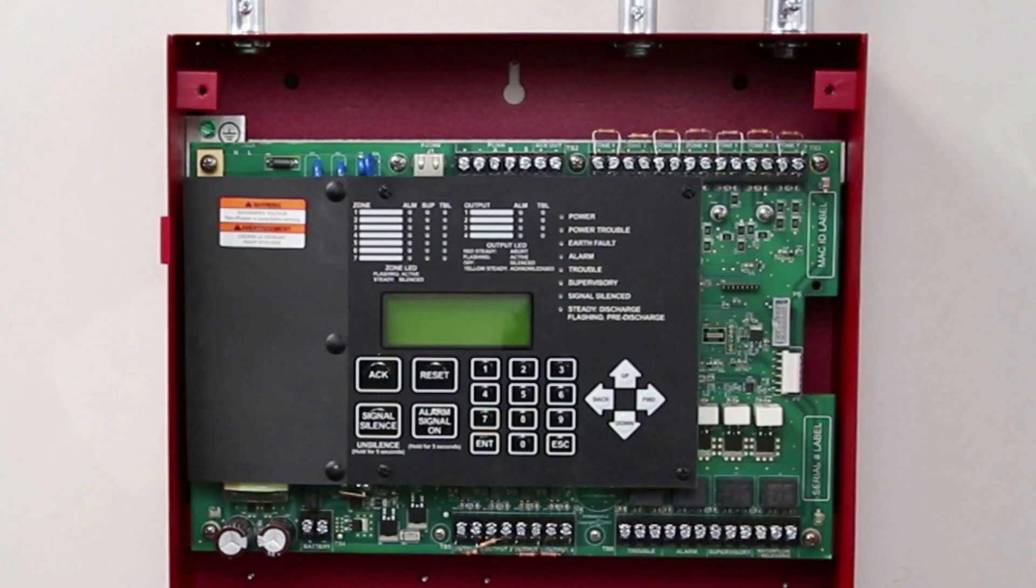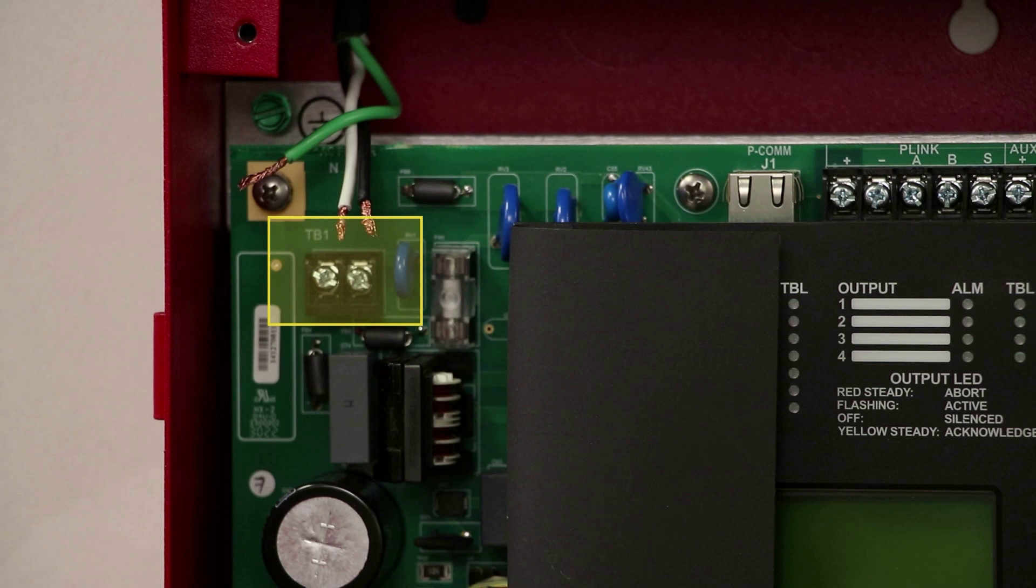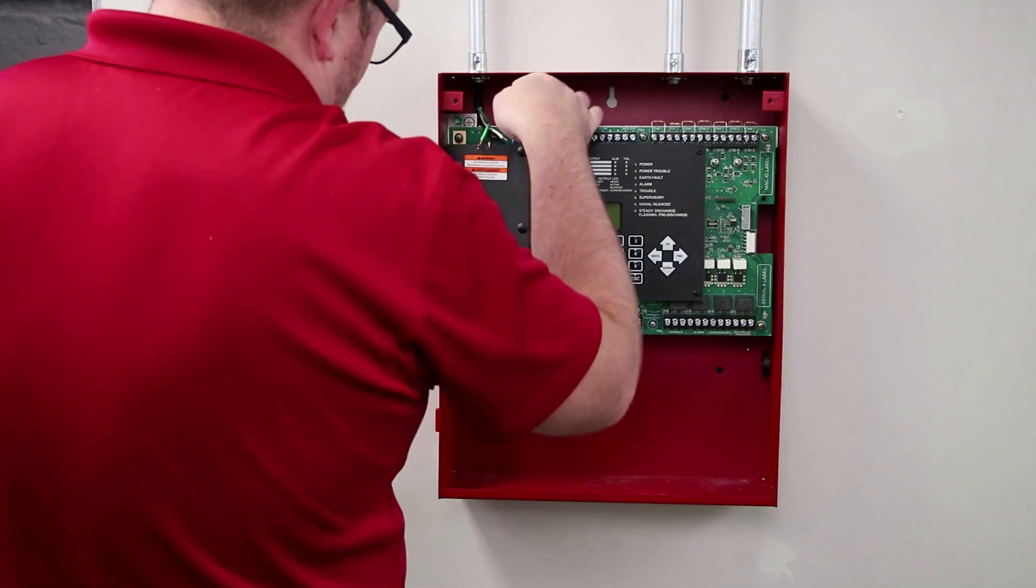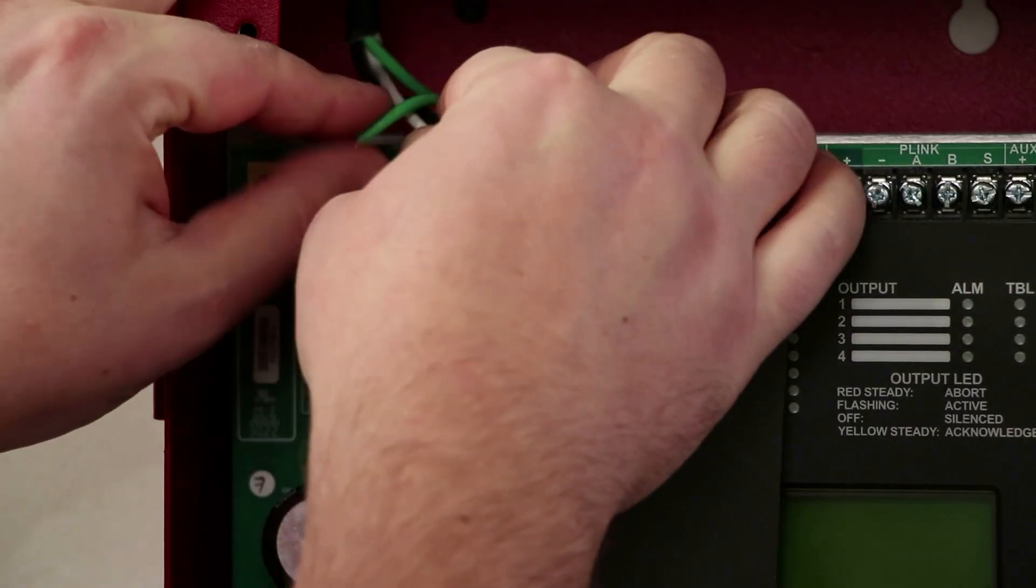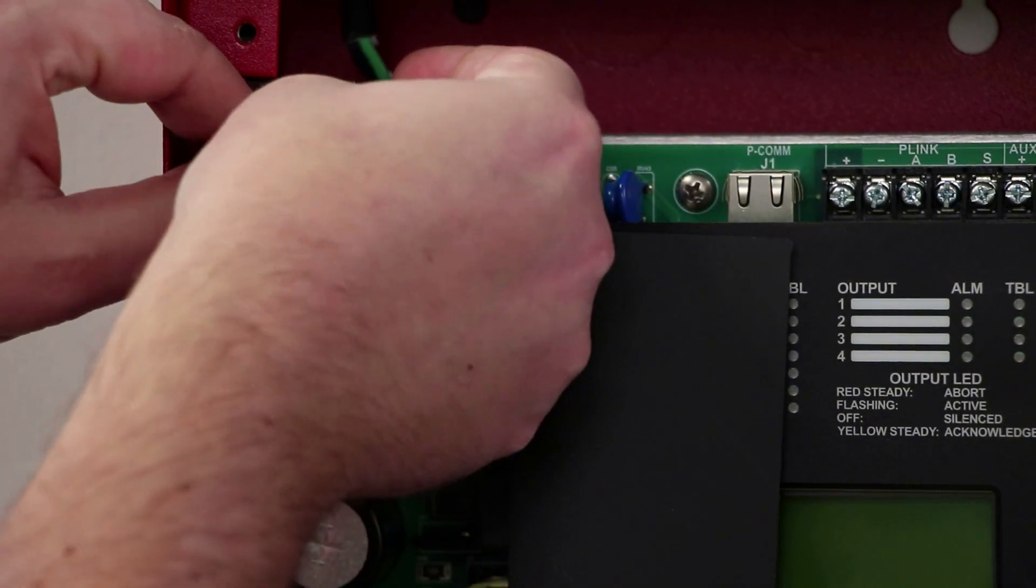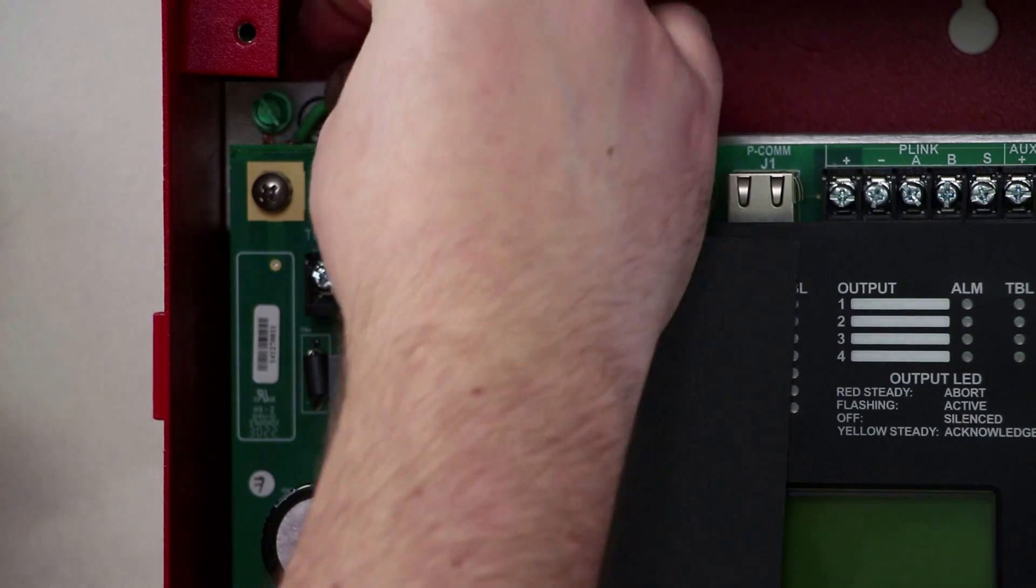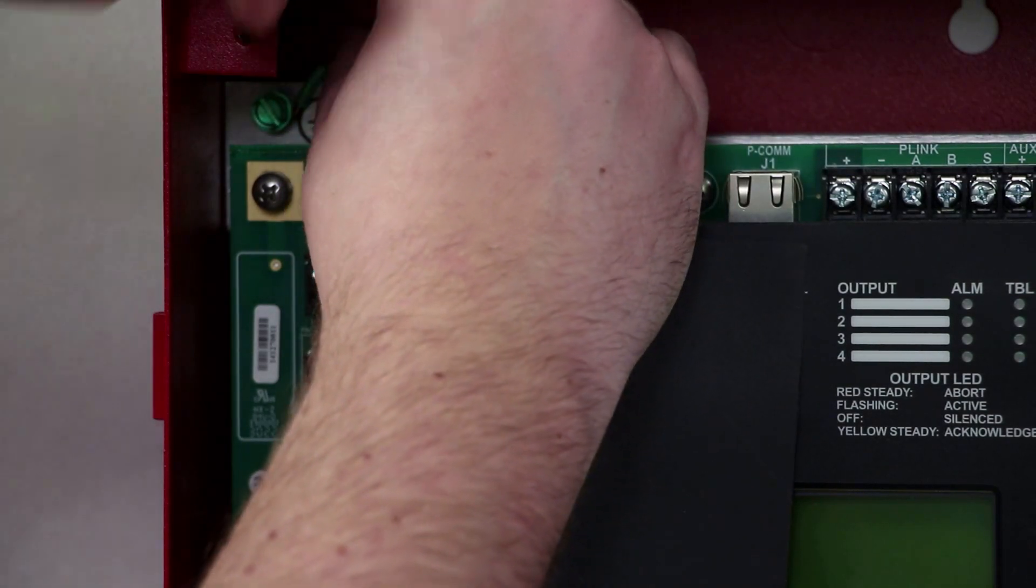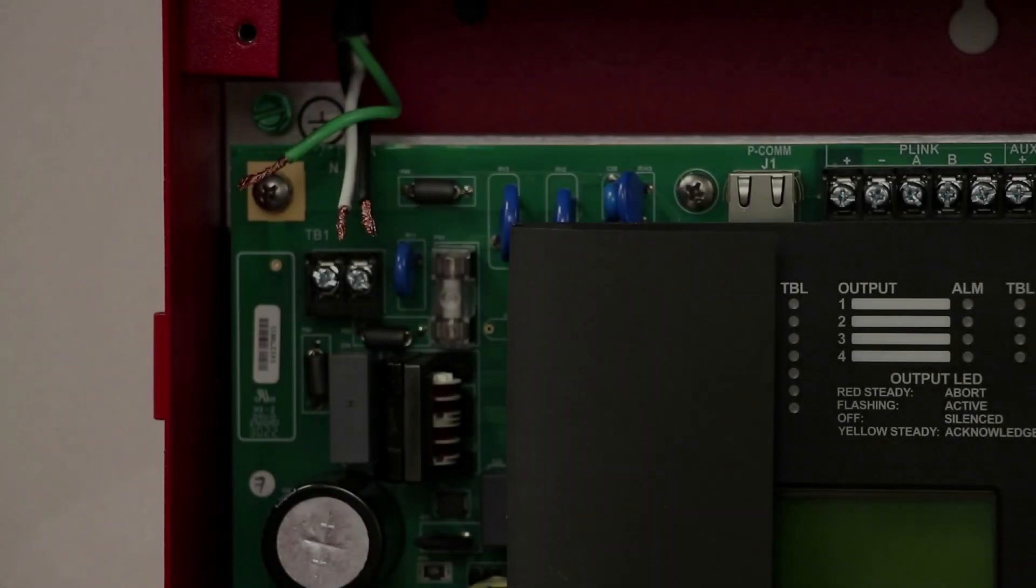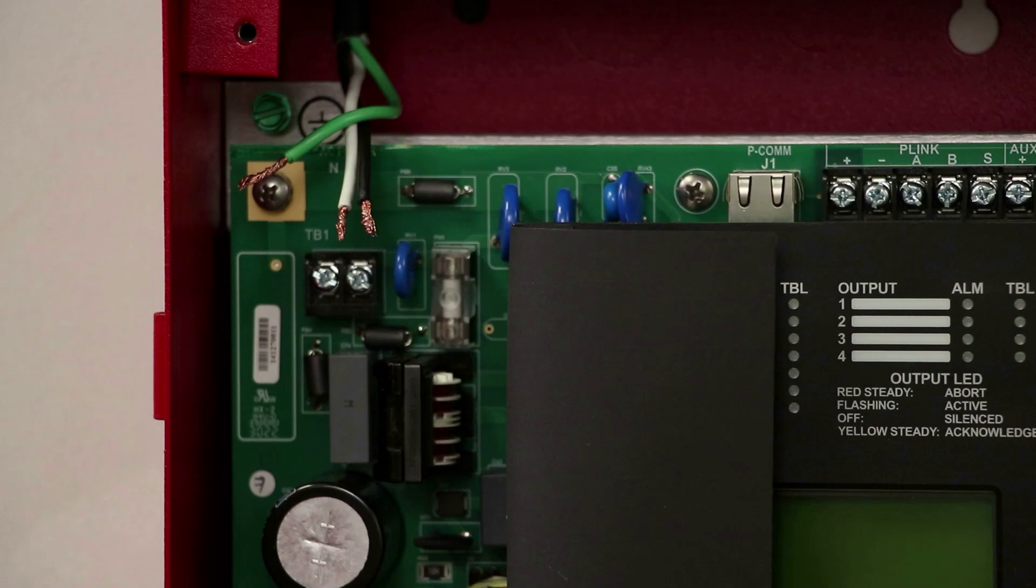The panel is auto sensing for 120 or 240 volt AC at either 50 or 60 Hertz. The AC terminals are located in the upper left hand portion of the main board and are labeled AC power. With the AC power still turned off at the circuit breaker, make the AC connections at the panel. The earth ground connection is located on the mounting rail. The line and neutral connections are located on TB1. Fold the insulation protecting TB1 to the side to gain access.